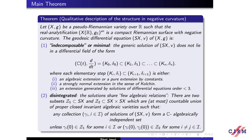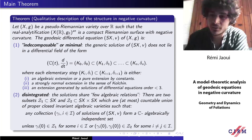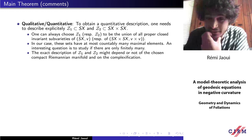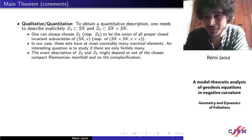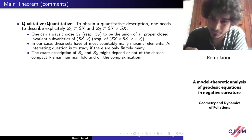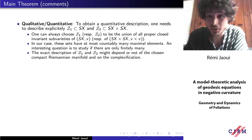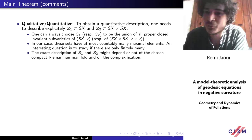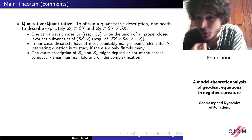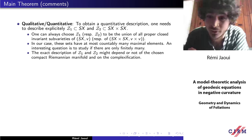A first comment: this is a qualitative, not quantitative, description. To describe the structure entirely, you need to describe exactly what Z1 and Z2 are. You can always pick Z1 and Z2 to be the union of all proper closed invariant subvarieties of S in one copy and two copies of the differential equation respectively.